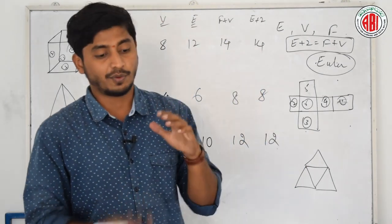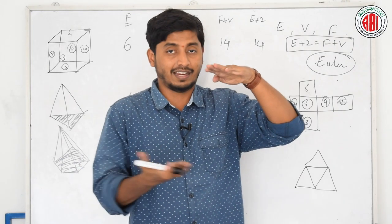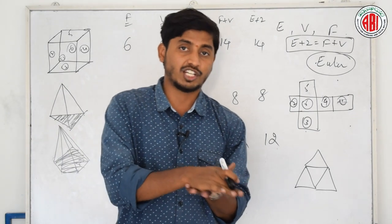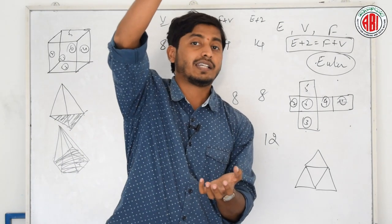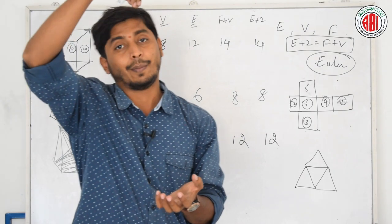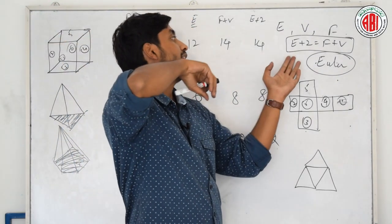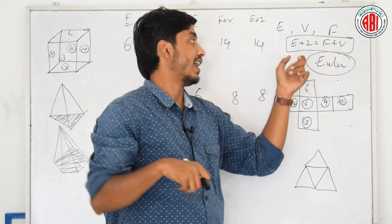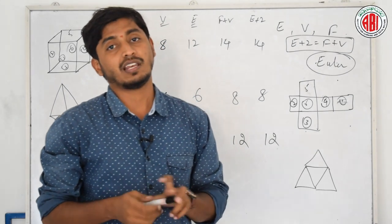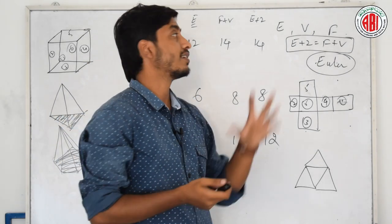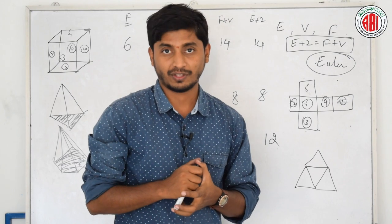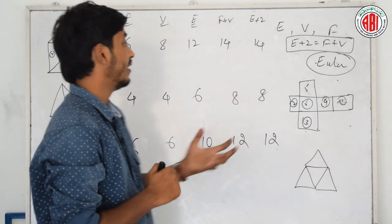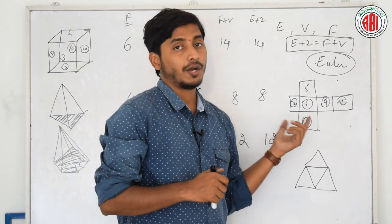We learnt what are prisms and pyramids. Prism is the bottom and the top shape will be the same. Pyramid is the base will have a particular shape and the edges will end at a tip. And edges, faces, vertices make a relation as E plus 2 is equal to F plus V, which is popularly called as Euler's geometrical relation. We have verified for different shapes.